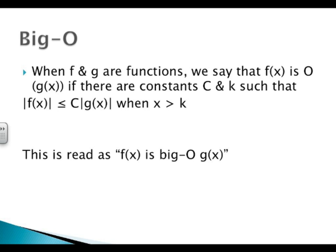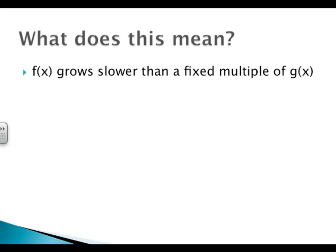So what does this all mean? It means that f of x grows slower than a fixed multiple of g of x.